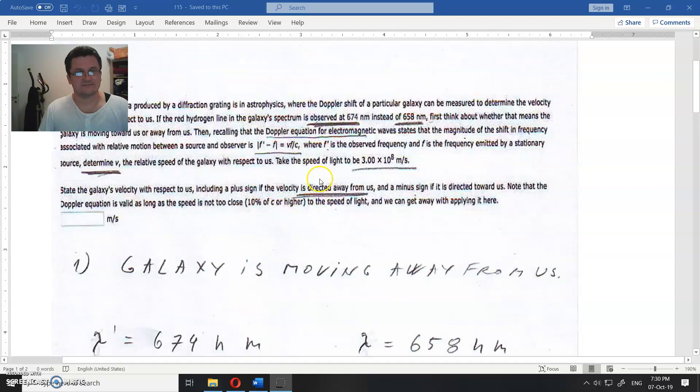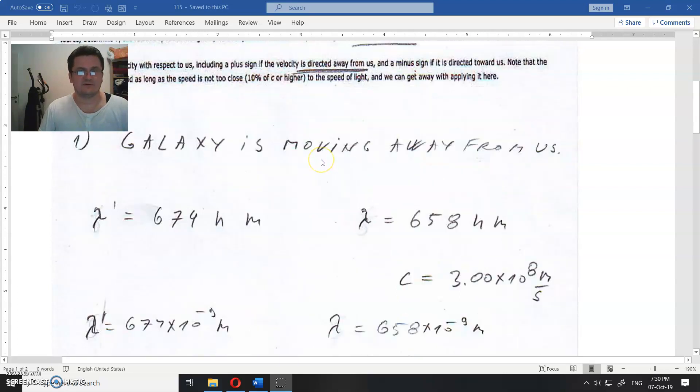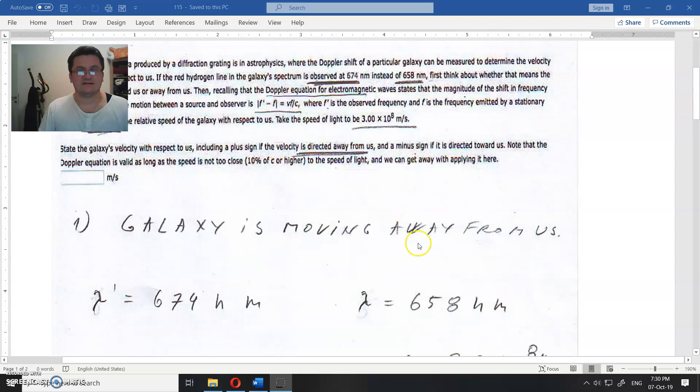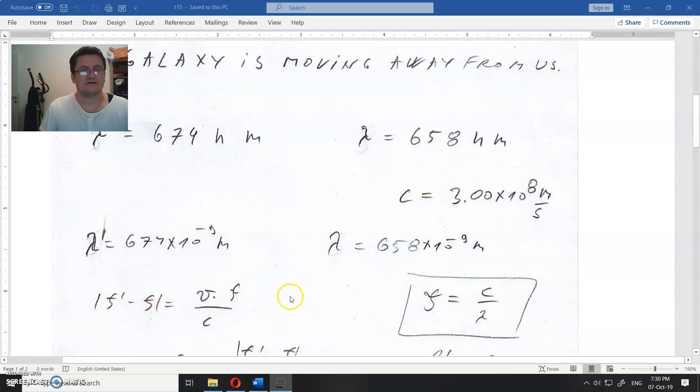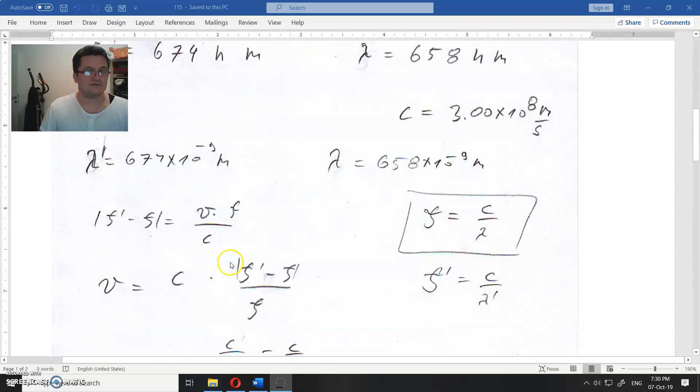Doppler, which is correct. So the galaxy is moving away from us. This is the wavelength that it should be, and this is what we measured. This is the speed of light, and frequency is equal to speed of light divided by the wavelength. So you could try to do it yourself, or for the complete answer...